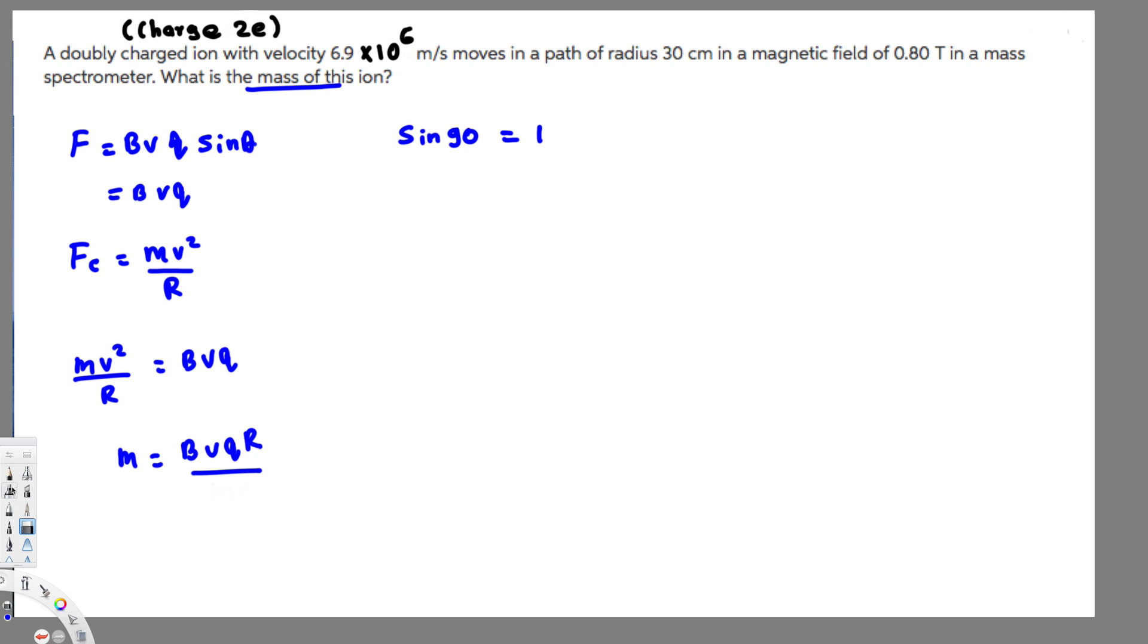Mass is going to be equal to BqR over v². If you notice, v² and this v cancel, and we only get BqR over v. We already cancelled to get BqR over the velocity.